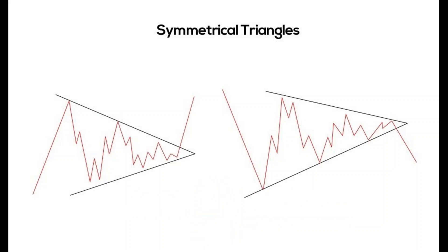To spot a symmetrical triangle pattern, you should first look for a clear uptrend or downtrend on the price chart. Once you have identified the trend, look for two trend lines that connect the highs and lows of the price action. These trend lines should converge towards each other, creating the triangle pattern.